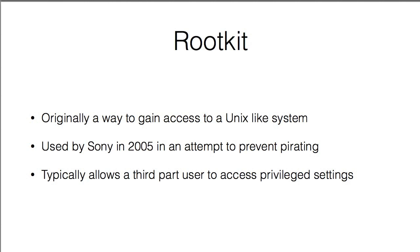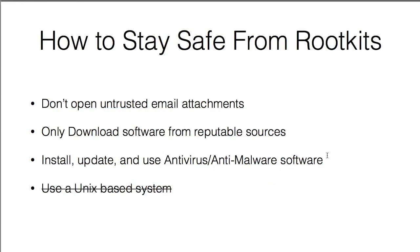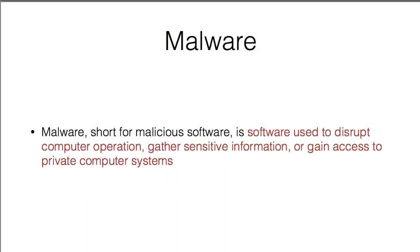How do you stay safe from rootkits? Don't open untrusted email attachments, only download software from reputable sources, and install, update, and use antivirus or anti-malware software. Unix-based systems are also vulnerable, but less so — they're typically safer just because of what it takes to run software on them.